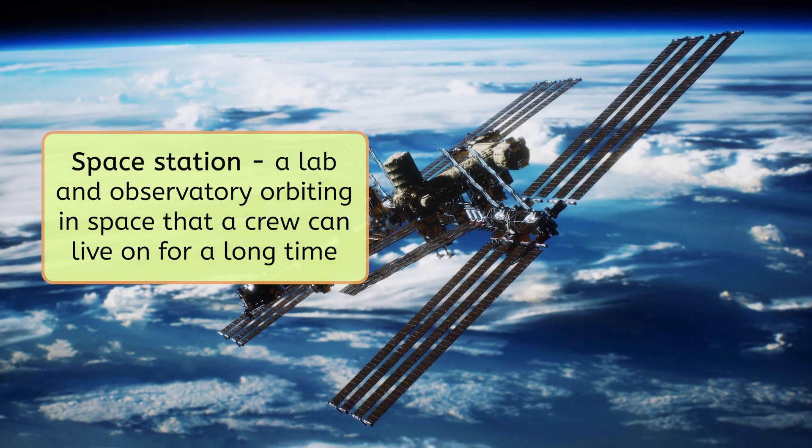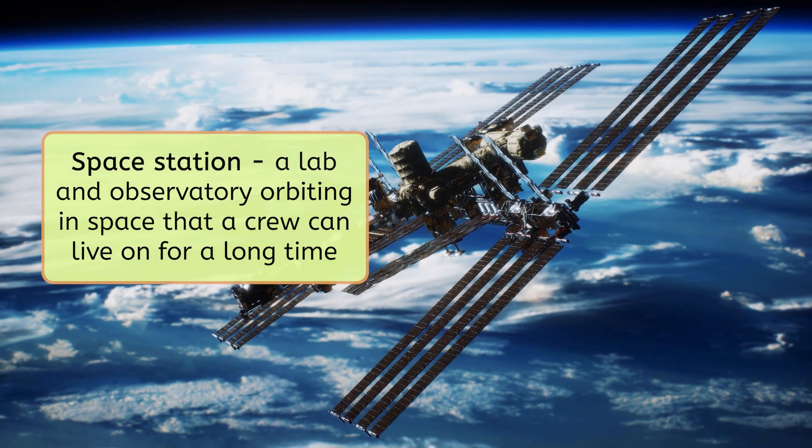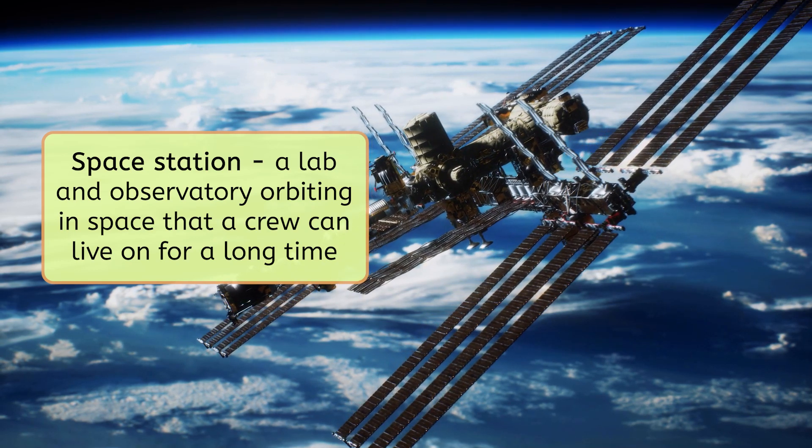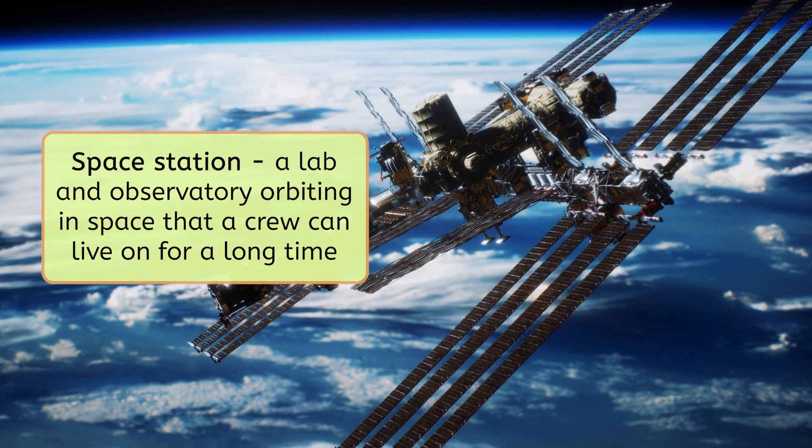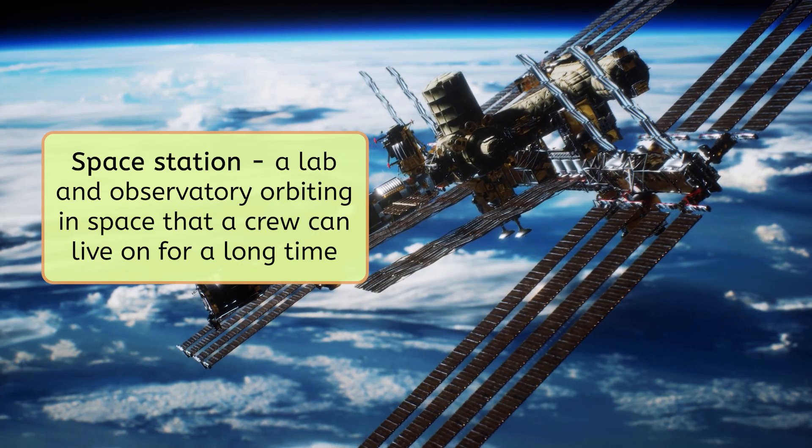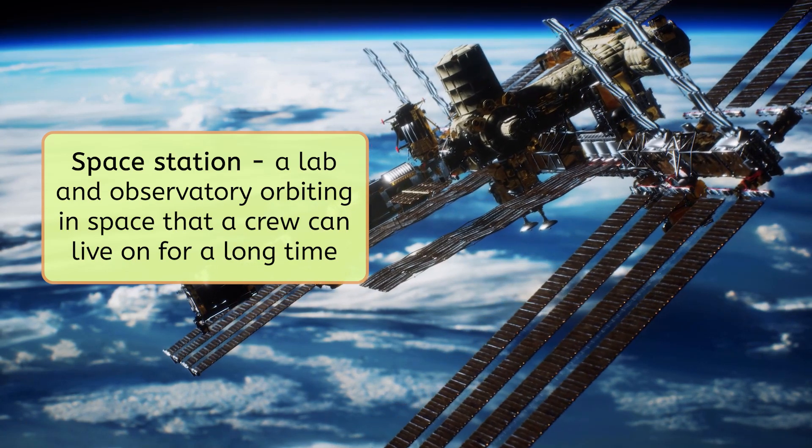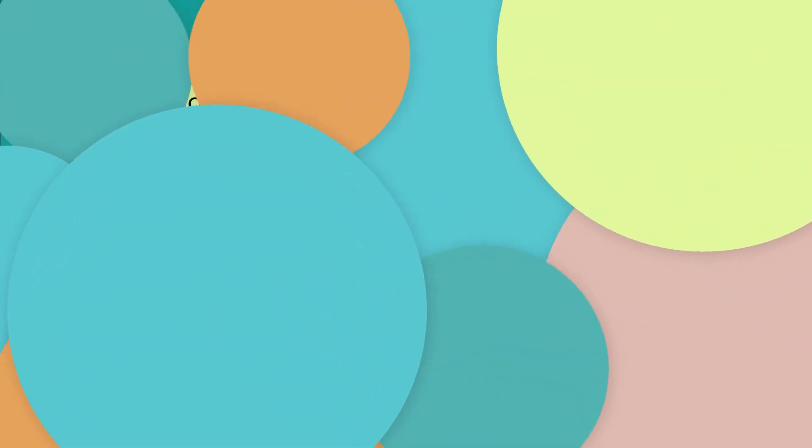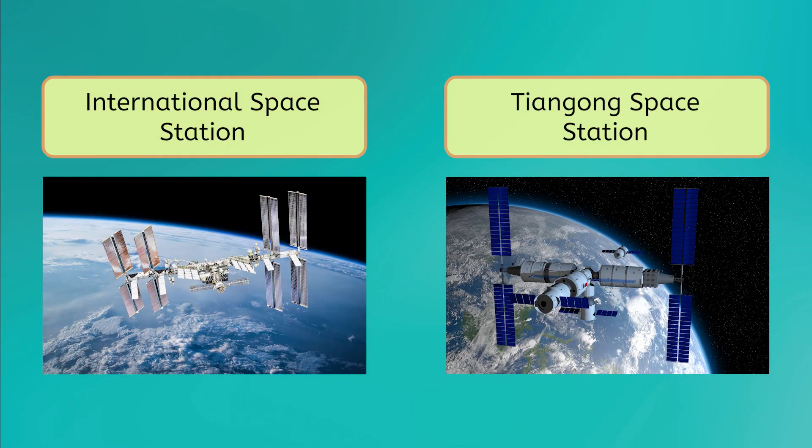Space stations are basically complete labs and observatories that orbit the Earth in space. They have electricity, water, food, air – everything a crew needs to live in space for a long time while they study space. There are astronauts living and learning on two space stations in orbit right now. And there are plans to keep crews working in them for years to come.